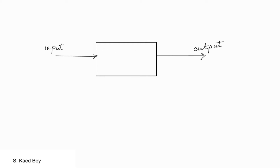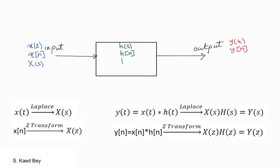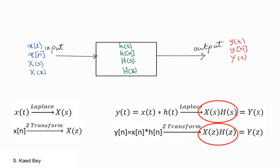The representation could be in the continuous or discrete time domain, and you would need a convolution operation in order to find the output response. On the other hand, the input-output relationship could also be expressed differently as a rational fraction in the Laplace or the Z domain. In these latter cases, simple multiplication would replace the convolution.